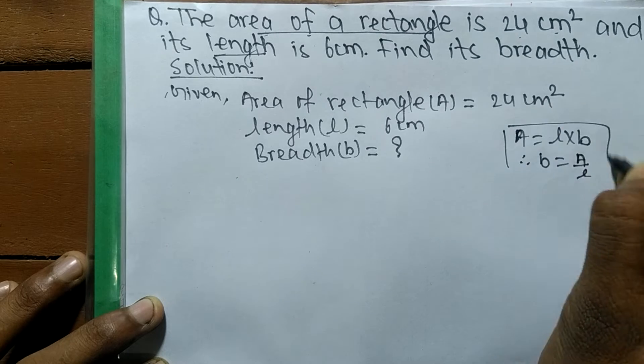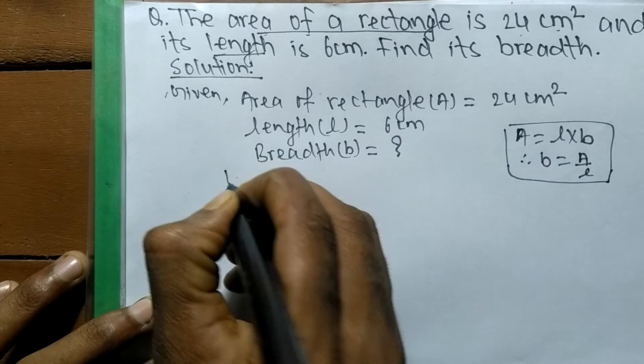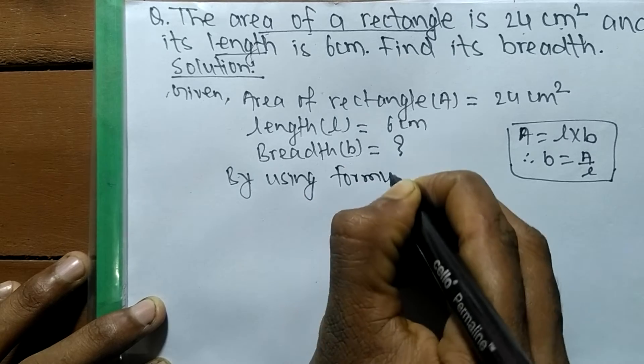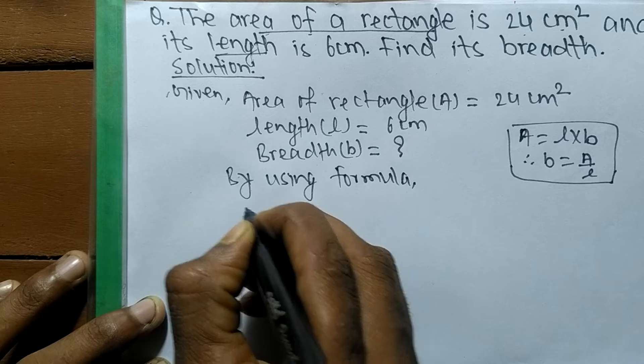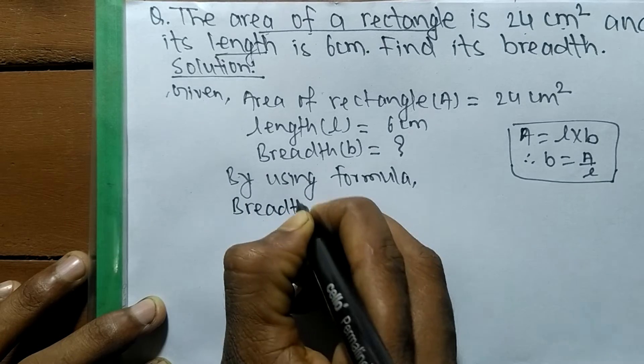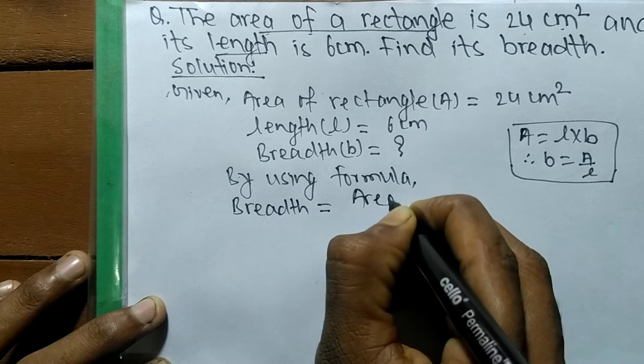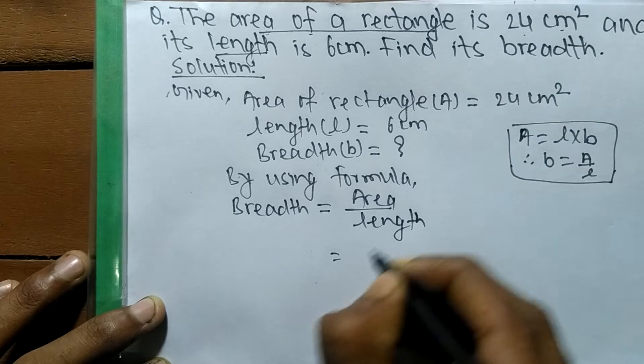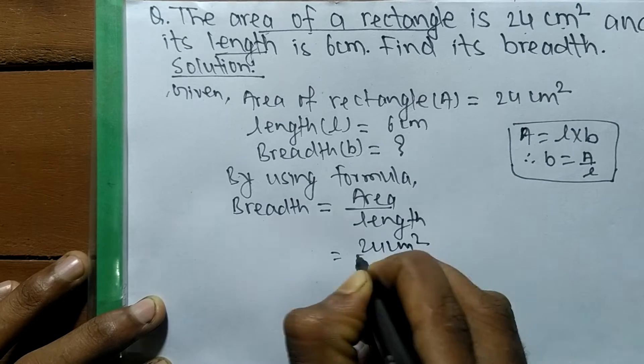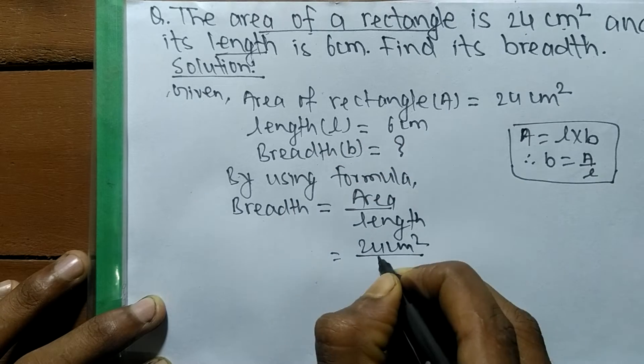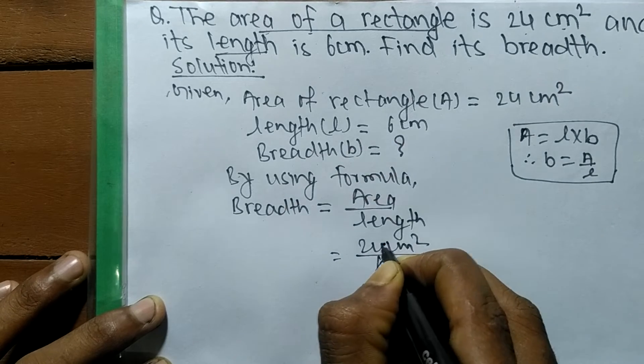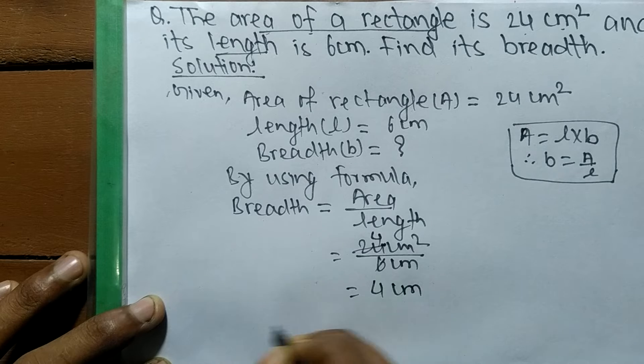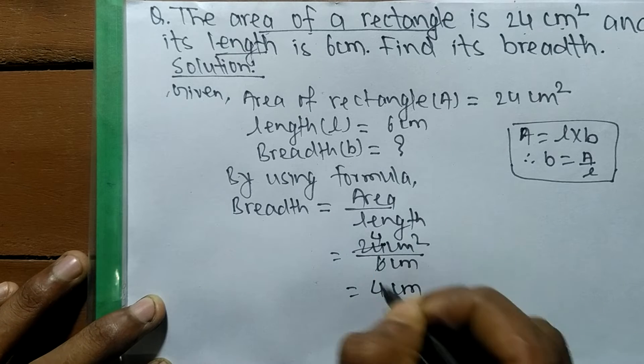So by using the formula, we can directly write breadth is equal to area by length. So area here is 24 centimeter square by length here is 6 centimeter. So 6 divides 24, it becomes 4, so it is equal to 4 centimeter. So we got the value of breadth is 4.